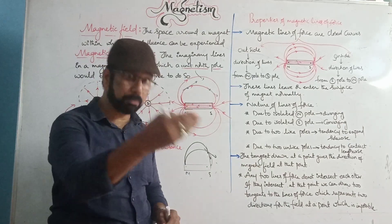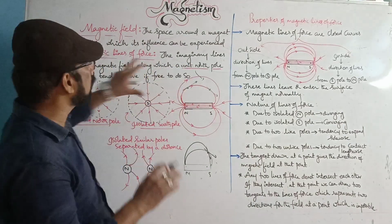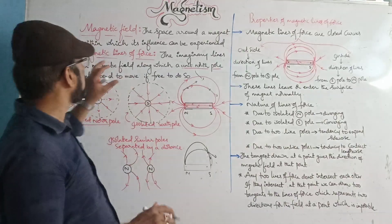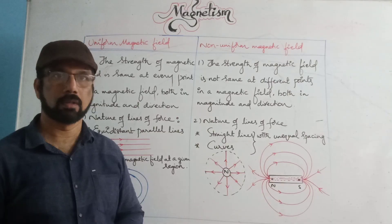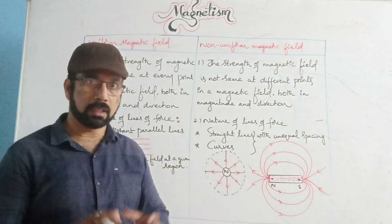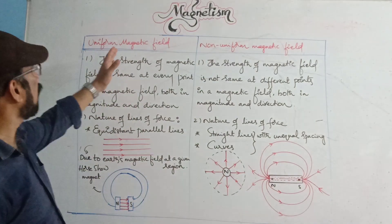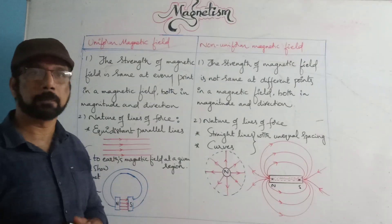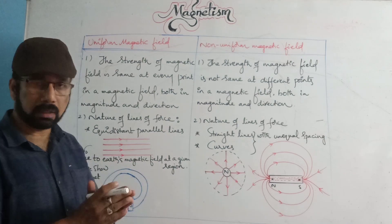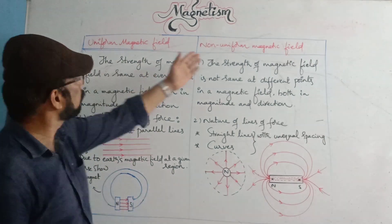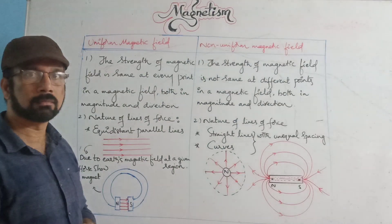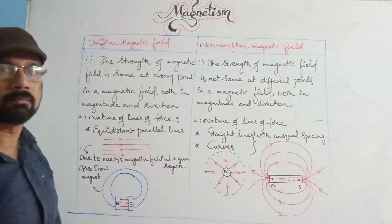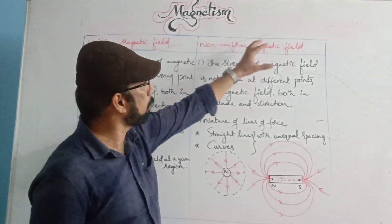This non-intersection property is important for exam purposes. Now let us discuss the classification of magnetic fields. The magnetic field can be classified into two types: uniform magnetic field and non-uniform magnetic field.